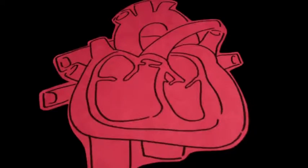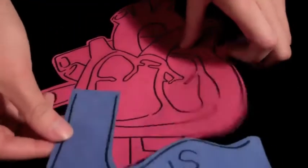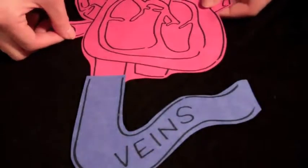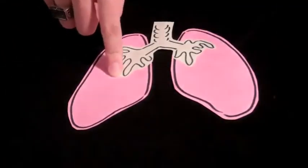Your heart is a pretty complicated organ, but for the purposes of this video, I'm going to simplify things a little bit. There are veins that carry deoxygenated blood from the rest of your body back to the heart. This blood gets pumped to your lungs where a gas exchange occurs.